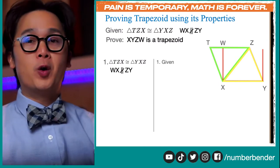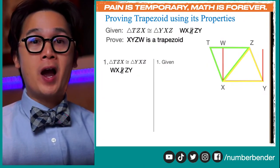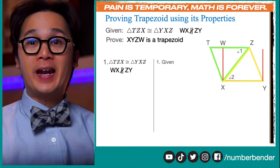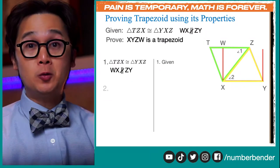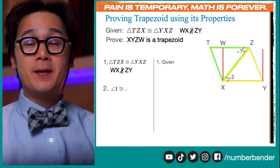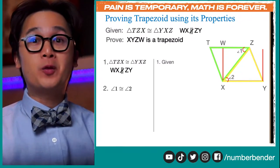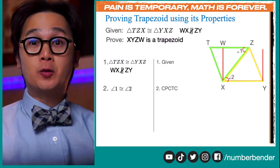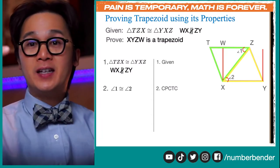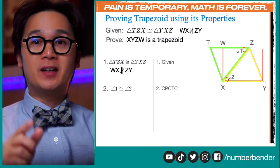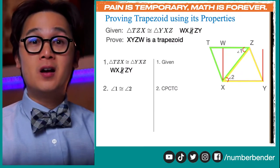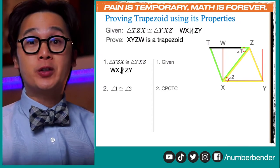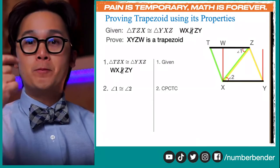If you want to show they are not parallel, you can extend line WX sideways and see that it's not going to be equal or congruent to ZW because their angles are different. Now, since we are seeing congruent triangles, let's use their angles and congruency to start our proof. I'm going to focus on angle Z and angle X, calling them angle 1 and angle 2. Angle 1 and angle 2 are congruent because of the CPCTC acronym — corresponding parts of congruent triangles are congruent — so angle Z and angle X are also congruent.